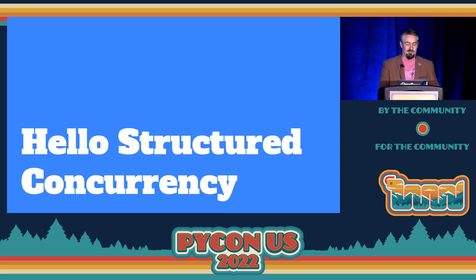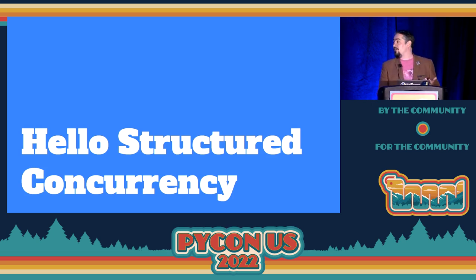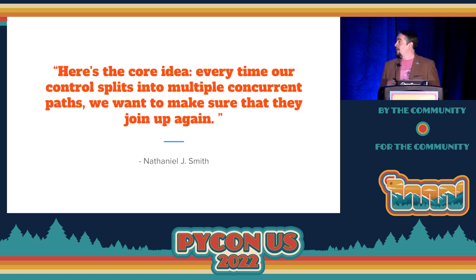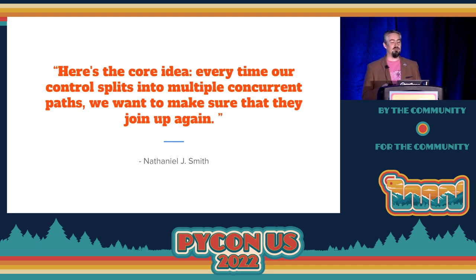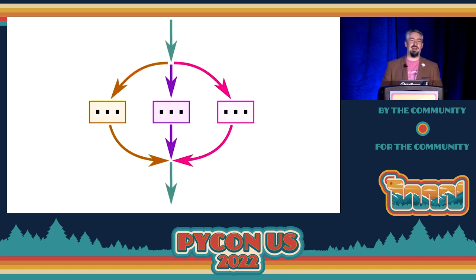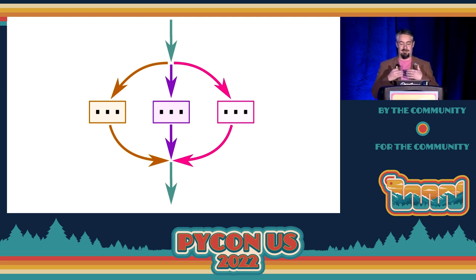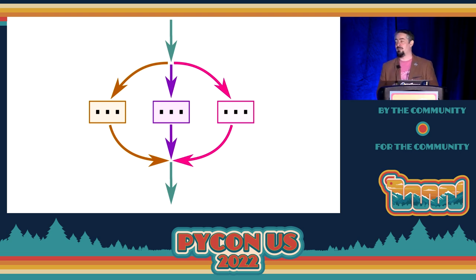Now we come to the meat of this talk: structured concurrency. We've seen concurrency — the ability to run tasks that delegate to the event loop. What is structured concurrency? I'm going to quote Nathaniel Smith, the author of Trio: every time our control path splits into multiple concurrent paths, we want to make sure they join up again. The green task starts doing something concurrently, and all of those tasks must finish before the green task can continue running.